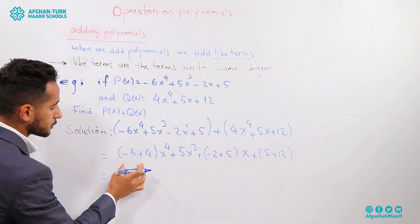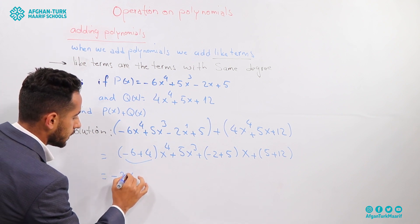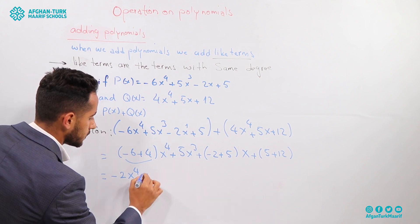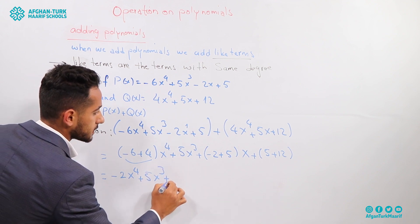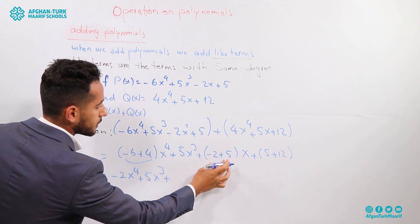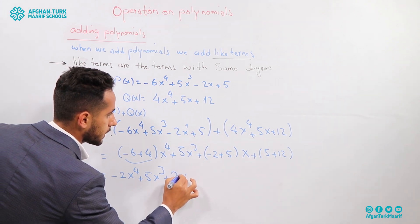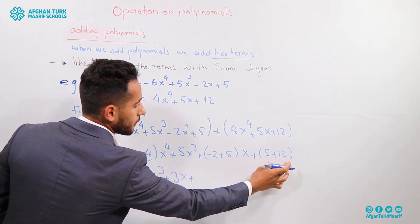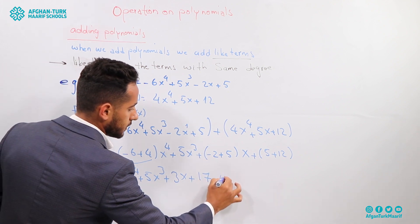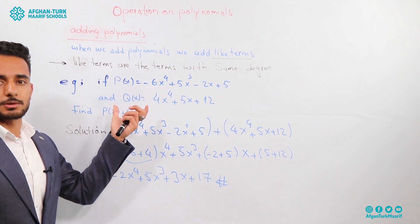So the result is: minus 6 plus 4 equals minus 2x to the power of 4, plus 5x cubed, plus minus 2 plus 5 equals plus 3x, plus 5 plus 12 equals 17. This is the addition of these two polynomials.